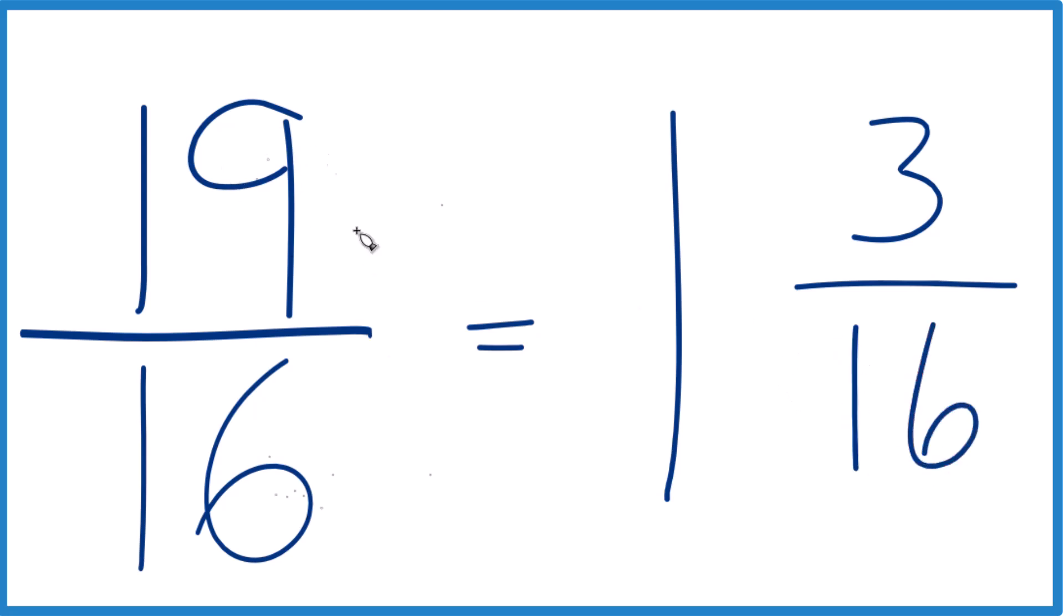and 19 sixteenths equals 1 and 3 sixteenths as a mixed number. And you can check that, 1 times 16, that's 16, 16 plus 3, that's 19, and we just kept the denominator the same.